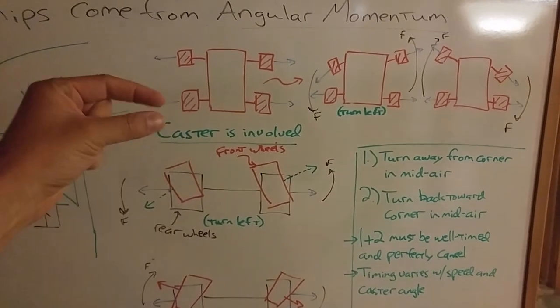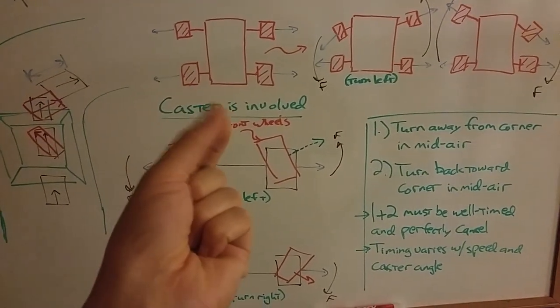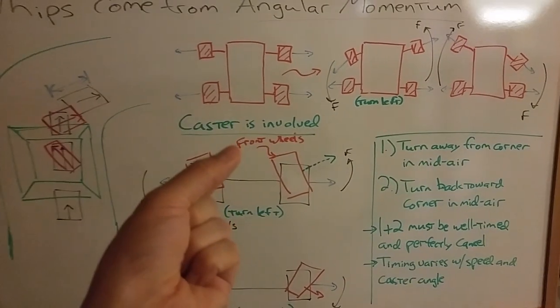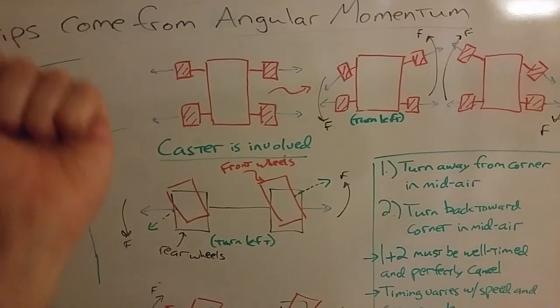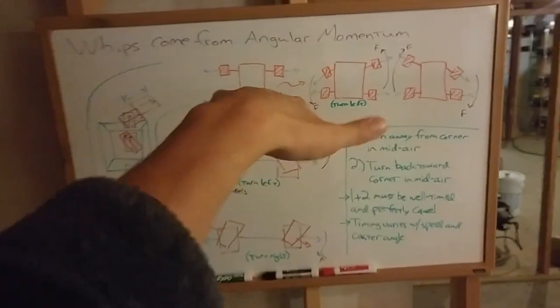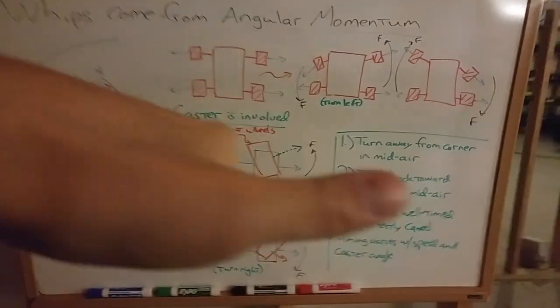You can imagine, if you will, taking an imaginary string and gluing it to the wheel nuts on each of the four wheels on the car, and just pulling outwards on each one of those. So while the car is in midair, if it's going perfectly straight, and you're pulling outwards on all four of those strings, the car is going to stay level.